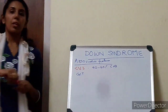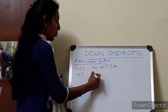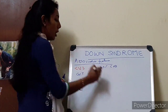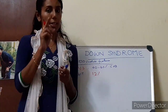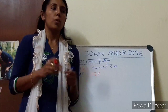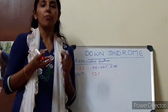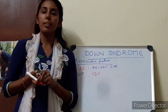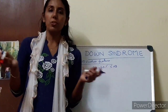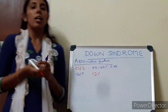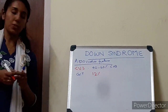GIT: they have around 12% more risk of atresia, especially duodenal atresia. They have more risk of development of imperforate anus, annular pancreas, and related gastrointestinal anomalies.